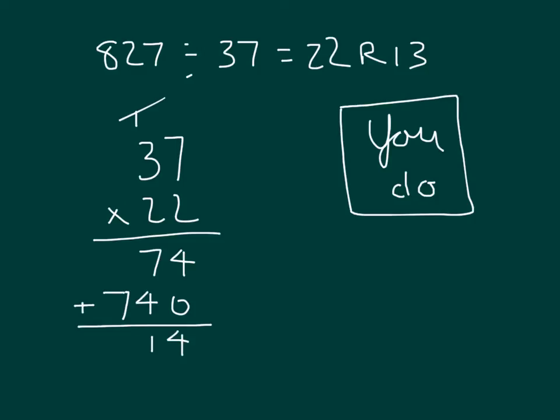And what do we do with that remainder is that we add it back on in, and then so that would be 827, which matches with what we had and what we were dividing.